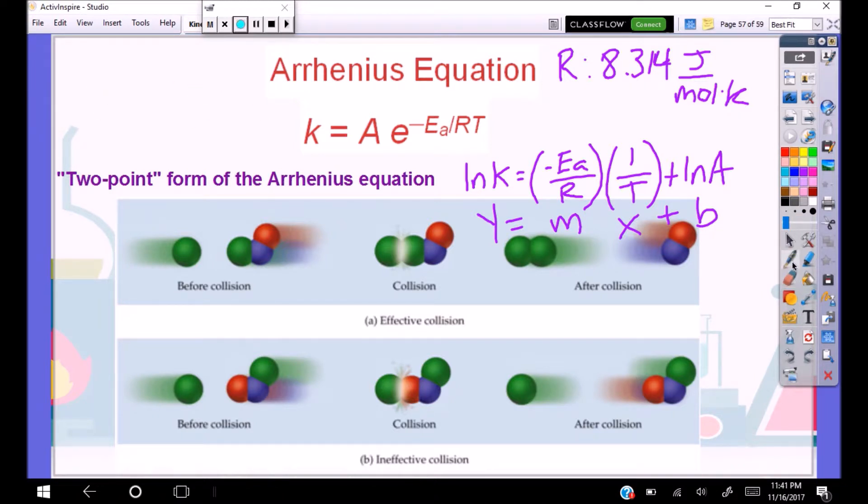So we have our slope is equal to negative EA over R. We can then rearrange this and say that EA, our activation energy, is equal to the slope times negative R. So this is what showed up in our lab. When we graph the natural log of our K values, we should be able to multiply by R over here and get our activation energy for our reaction.